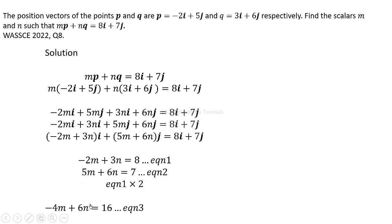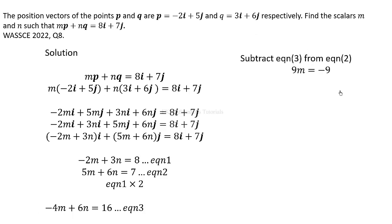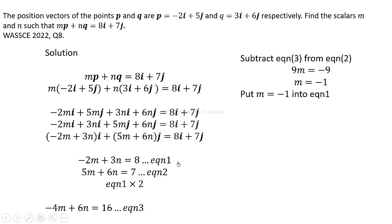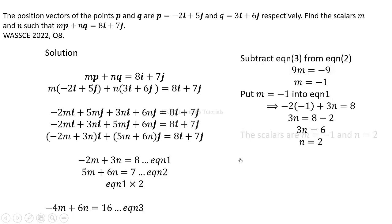Multiplying gives us negative 4m plus 6n equals 16, which we call equation 3. Subtracting equation 3 from equation 2 eliminates n, giving 9m equals negative 9, so m equals negative 1. Substituting m equals negative 1 back into equation 1 gives n equals 2. Therefore the scalars are m equal to negative 1 and n equal to 2.